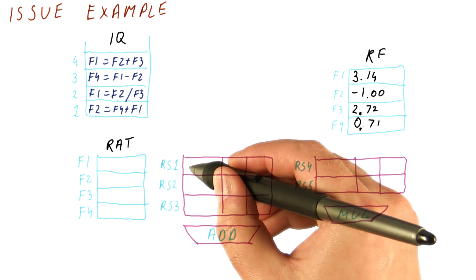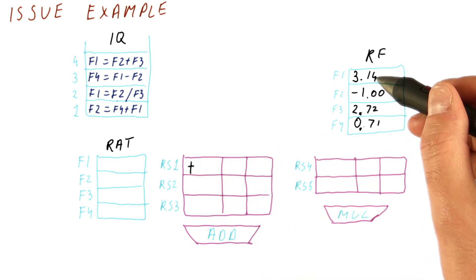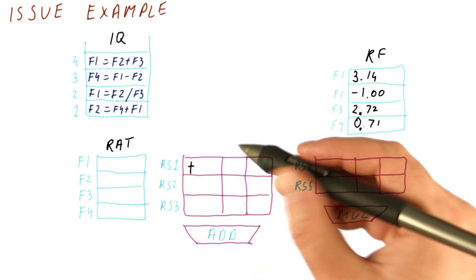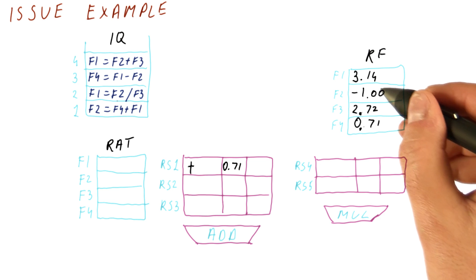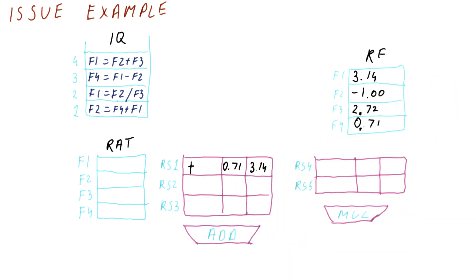So we're going to say that this is an add. And we're going to take the value for F4 and F1. And that's going to be 0.71, and it's going to be 3.14. And place the instruction in the reservation station.